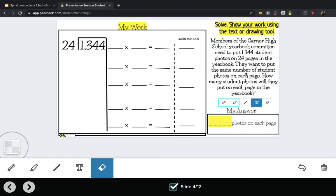Members of the Gardner High School yearbook committee need to put 1,344 student photos on 24 pages in the yearbook. They want to put the same number of student photos on each page. How many student photos will they put on each page in the yearbook?